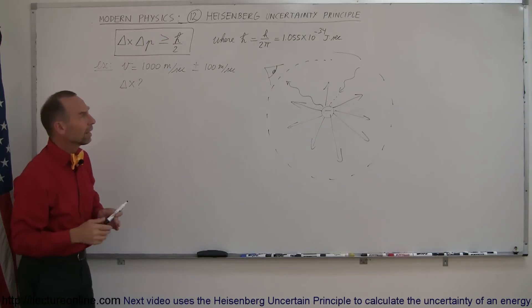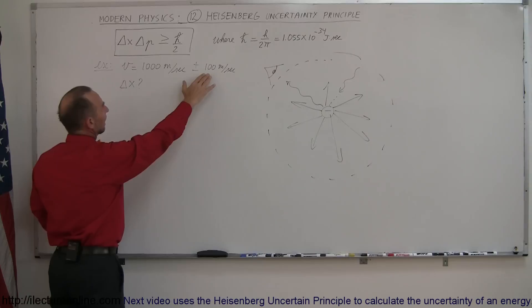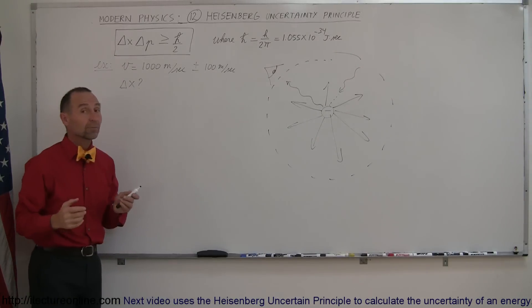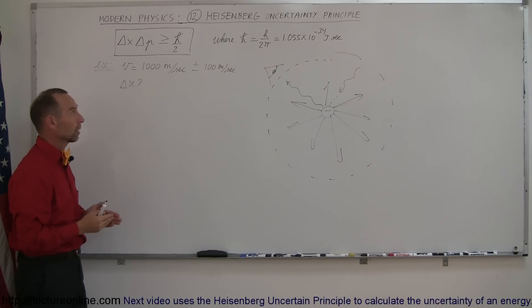To illustrate how that works, here let's assume that we have an electron that's moving at 1000 meters per second and that has an uncertainty in its velocity of 100 meters per second. And then we're supposed to find out the uncertainty in that electron's position.